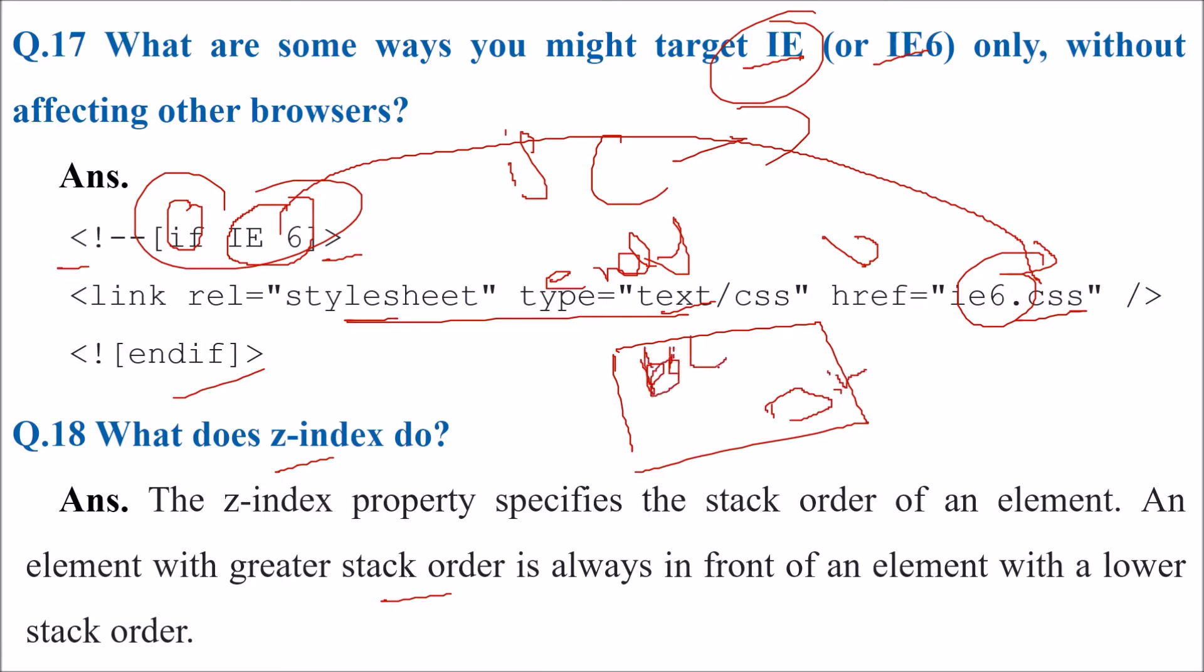For example, if you have a division with an image and a background picture, the z-index will tell which one will be on the front side and which one will be on the back side.